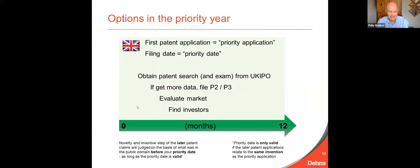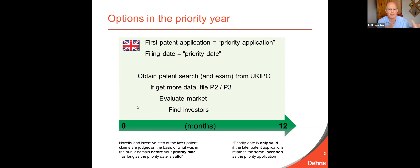First of all, this priority year. You can file a first patent application, often in your home country, once you've checked who the inventors are. Your first patent application is called a priority application — apart from in the United States where it's called a provisional application, but provisional applications and priority applications are essentially the same thing. The date you file your priority application is called the priority date. Once you file it, only things in the public domain before that date can be cited against the novelty and inventive step of your invention. So it's quite important to get an early priority date.